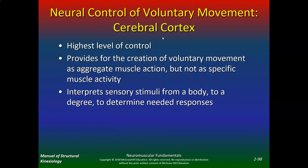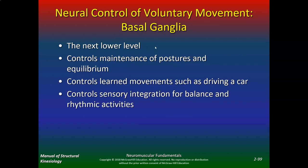The cerebral cortex has the highest level of control — it provides for the creation of voluntary movement as aggregate muscle action, but not as specific muscle activity. It interprets sensory stimuli from the body to determine needed responses. The basal ganglia is the next lower level. It controls maintenance of posture and equilibrium, controls learned movements such as driving a car, and controls sensory integration for balance and rhythmic activities.